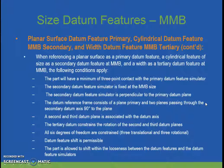So we now have planar surface primary, cylindrical datum feature secondary, and width feature tertiary. The part will have a minimum of three points of contact at the primary. The secondary datum feature is fixed in size at MMB and perpendicular to the primary. The datum reference frame consists of a primary plane and two planes passing through the secondary datum. A second and third datum plane is associated with the datum axis. The tertiary datum constrains rotation. All six degrees of freedom are constrained, and datum feature shift is permissible — the part is allowed to shift within the looseness between the datum features and the datum feature simulators.